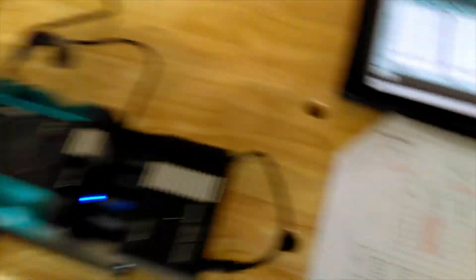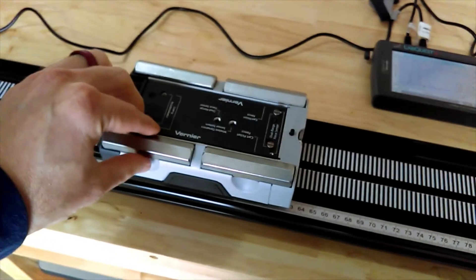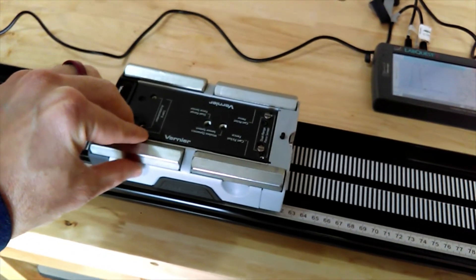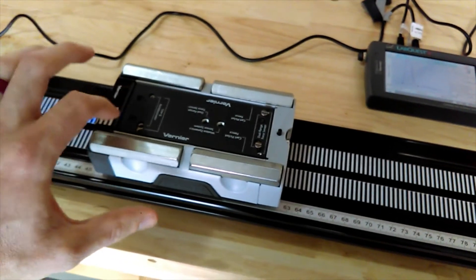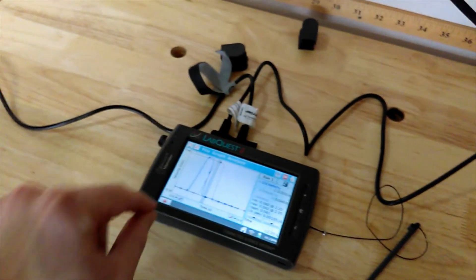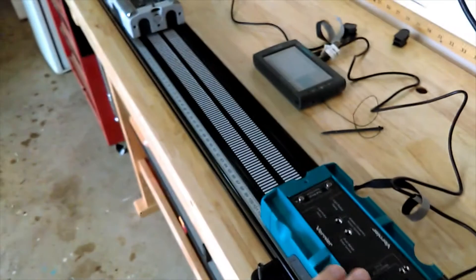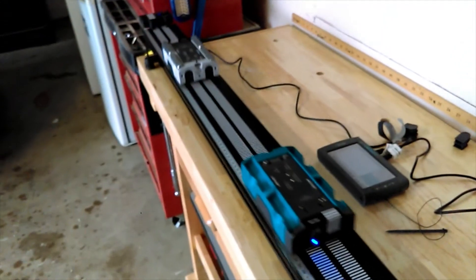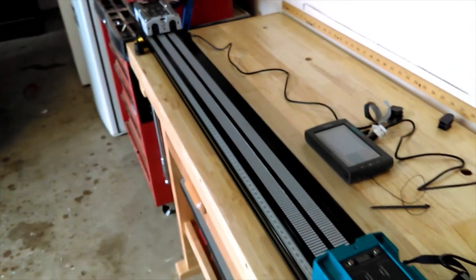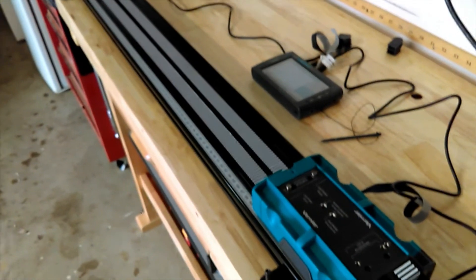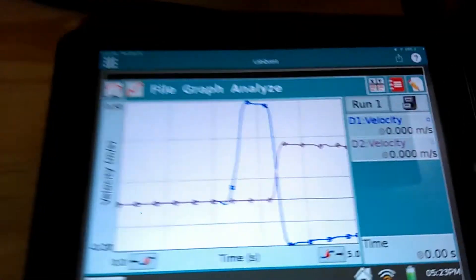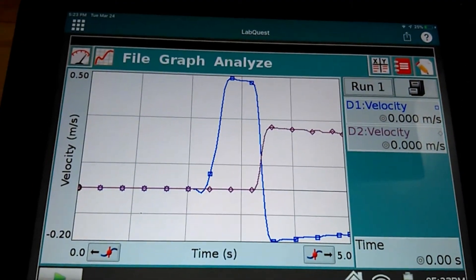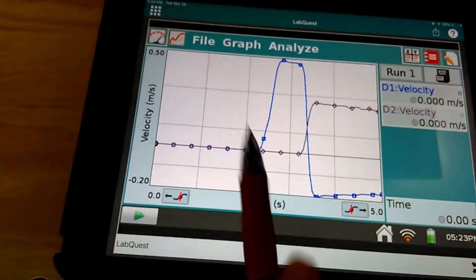I got trial or run number six set up. The main change is we added these extra masses on top of car number two right here. As we run this one, I'll start data collection and give car one a push. Notice the difference this time—car one came back to me over here.